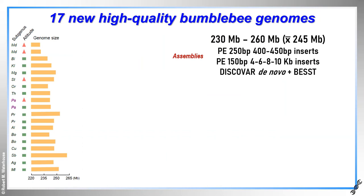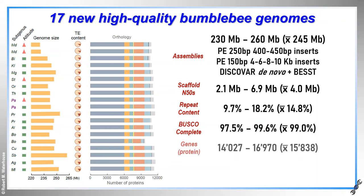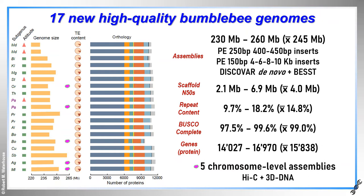Now with species from each of the 15 Bombus subgenera, we have dramatically extended sampling beyond just terrestris and impatiens. The genomes are relatively small, with the advantage of being able to use a single haploid drone per species to generate the fragment libraries. We were able to obtain scaffold N50s of between 2 and 7 megabases using DISCOVAR de novo and BEST, with repeat content analyses showing variations of between 8 and 18 percent repetitive DNA. The assemblies were remarkably complete in terms of expected gene content, averaging at 99 percent complete BUSCO recovery, and our annotation pipeline produced between 14,000 and 17,000 protein coding genes per assembly. For 5 species where we were able to use Hi-C data with the 3D DNA pipeline, we were able to build chromosomal level genome assemblies.